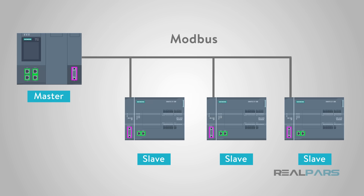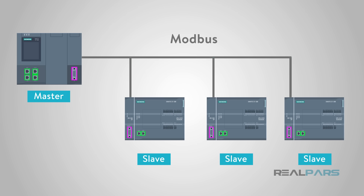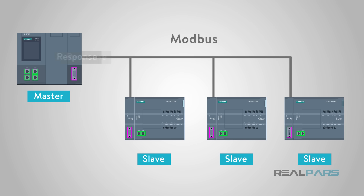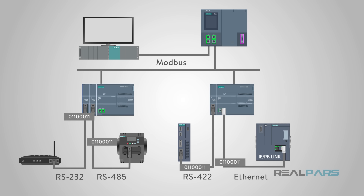Modicon published the Modbus communication interface for a multi-drop network based on a master-slave architecture. Communication between the Modbus nodes is achieved with send, request, and read-response type messages. Modbus is an open standard that describes the messaging communication dialogue. Modbus communicates over several types of physical media, such as serial RS-232, RS-485, RS-422, and over Ethernet.